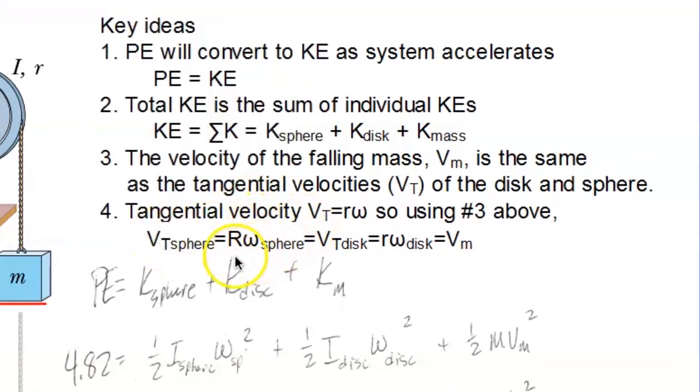So that means we can say the tangential velocity of the sphere is r omega of the sphere. That's our equation for vt.